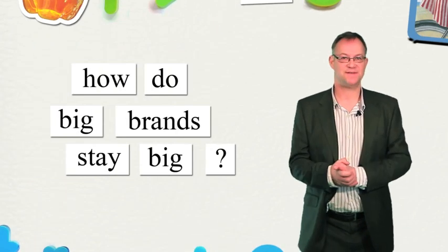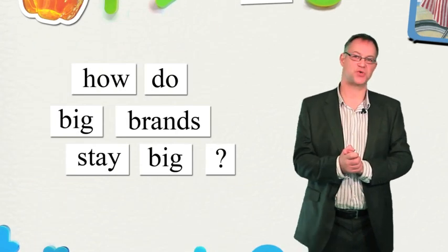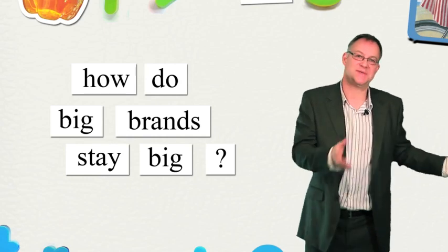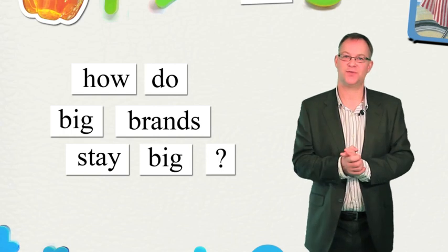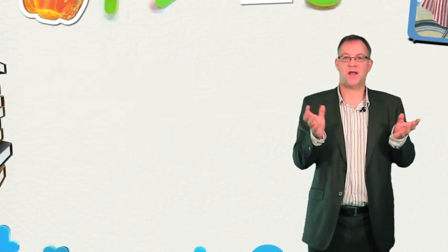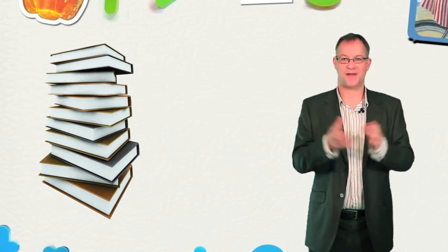If you put on a hard hat and a safety harness, grab a torch and go deep down into the basement of the Nielsen Company there on Heddington Hill in Oxford, you'll find a pile of very impressive brown leather-bound books.